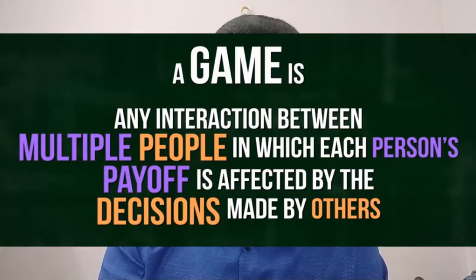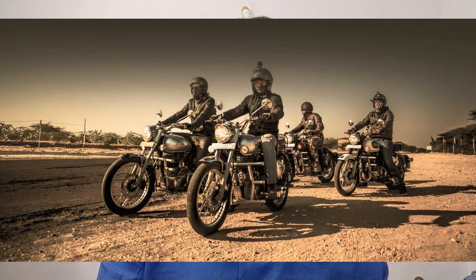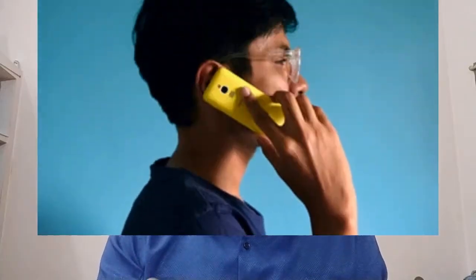Welcome to today's session. Today's topic is game theory. Game theory is actually an interaction between multiple people in which each person's payoff is affected by the decisions made by another. We are all subjects of game theory. For example, if you tell your best friend you'll go for an outing but cancel by evening, your friend then decides whether to call another friend, go for a movie, or stay inside. This is how your decision affects the decisions of others — that is game theory.